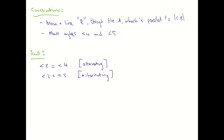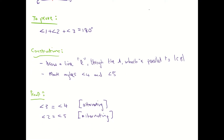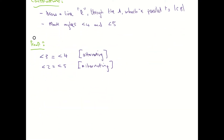Now we have one more thing to state. If we come back up to our picture, you can see that angle 1, angle 4 and angle 5 add up to 180 degrees because they are on that straight line L. That's the reasoning behind drawing in that red line L — so we can have 1, 4 and 5 adding up to 180. So in my proof I state: angle 1 plus angle 4 plus angle 5 is equal to 180, and the reason is that it is a straight line.